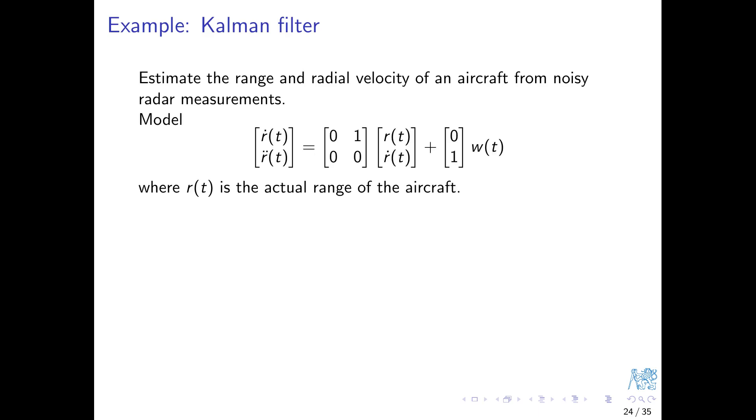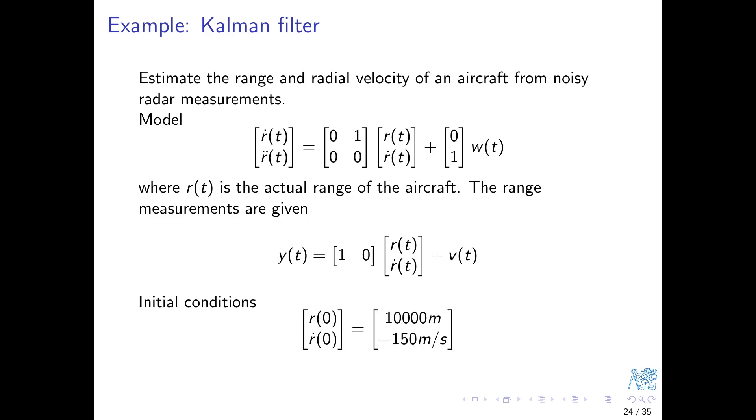Simple example on Kalman filter: estimate the range and radial velocity of an aircraft from noisy radar measurements of its position only. The model is just a double integrator. The state variables are the range r and its derivative, the radial velocity. Note that the problem of estimation has nothing to do with control, so we don't need to model how the control signal enters. Instead, we specify how the disturbance affects the system. We also need the output equation. It tells us that only the range is measured, and the measurement noise is directly added. Initial position and velocity are specified.